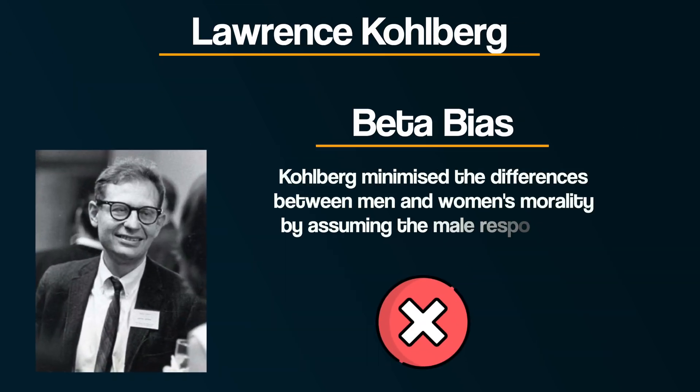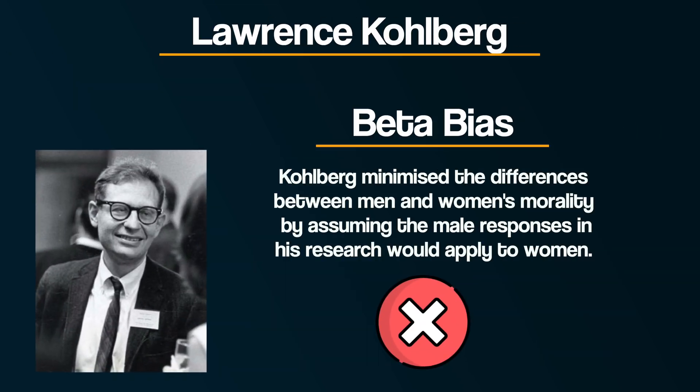So this is an example of beta bias, because Kohlberg minimised the differences between men and women by assuming the male responses in his research would apply equally to women.